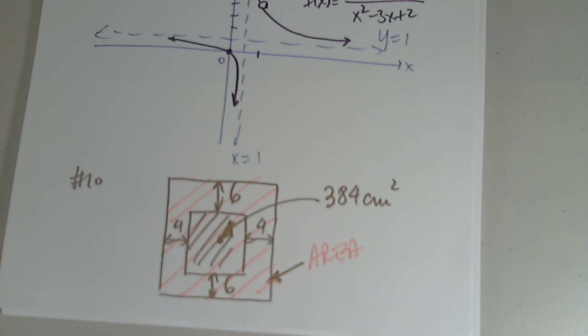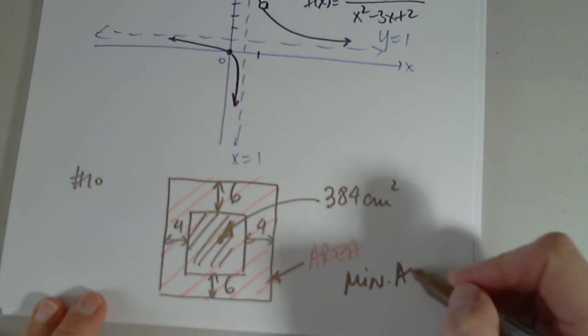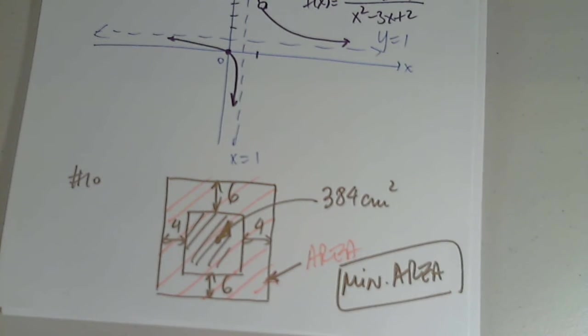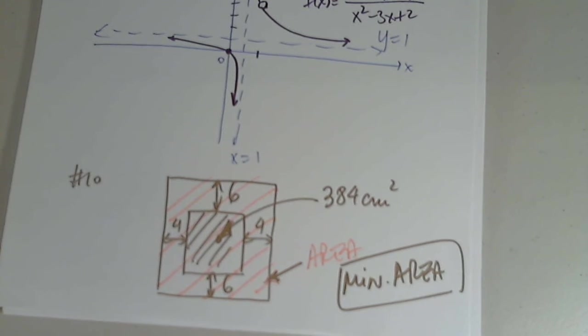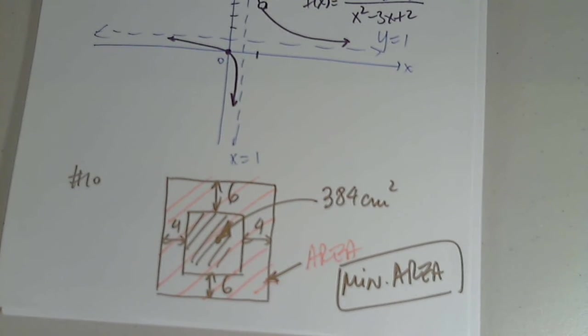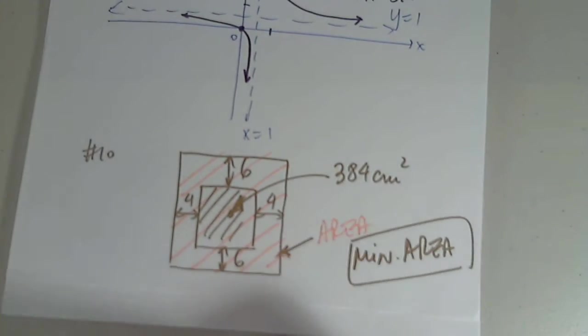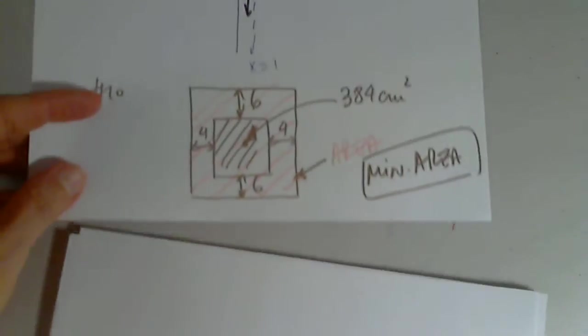Find the dimensions of the poster with the smallest area. So we are interested in minimizing the area. I cannot minimize a function I don't have. So our first step is to determine a function that represents the area of the entire poster.